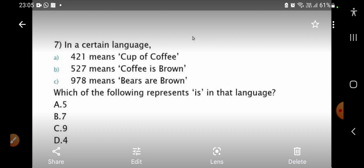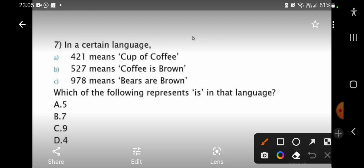First, we have to look at the similar words in the given sentences. Here coffee is there, here also coffee is there. Here also 2 is there, here also 2 is there. So, coffee represents 2.